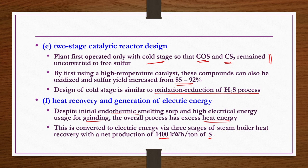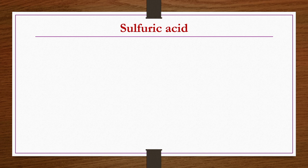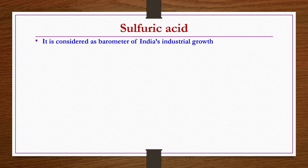This concludes sulphur production. Now we move to the production of sulphuric acid. Before going into production details, we cover a few basics: utilization, consumption pattern, and different grades. Sulphuric acid is considered a barometer of India's industrial growth; by early 1990s, India's production of sulphuric acid was almost on par with what the USA was producing.